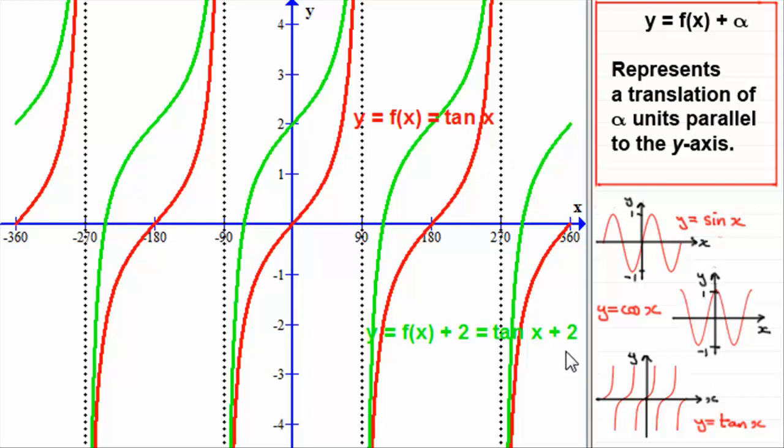So, this point here was at the origin. It's just now gone up two units. And that applies to all of these points. That 180 go up two units, and there it should be two units. So, well, I hope that's given you some idea of how we can apply this transformation, y equals f of x plus alpha, to any graph, and in particular, to these trig graphs.